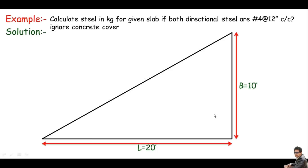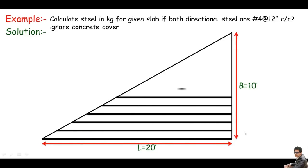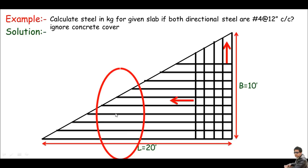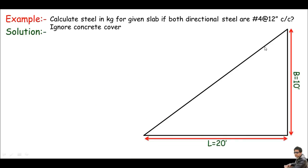Before starting the solution, let me show you how the steel must be distributed in this triangular slab. We can place steel bars in this direction and in the other direction as well. I'll first calculate the steel in this first direction, then come to the other side.